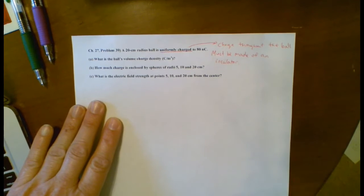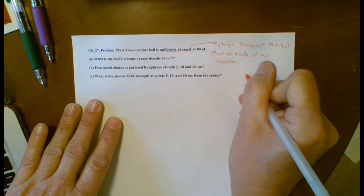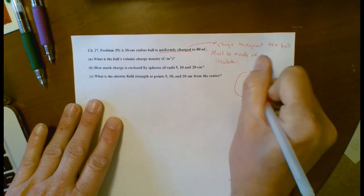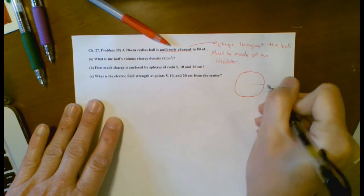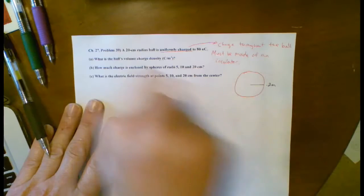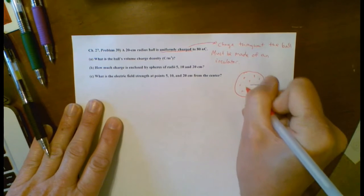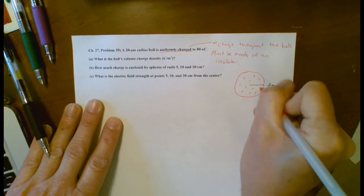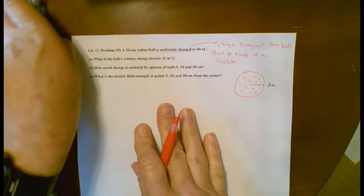And what does that mean? It must be made of an insulator. Otherwise, if it's a conductor, all the charge would go to the outside surface. So in my mind, I'm visualizing something like this, where we've got a 20-centimeter radius here. I'll do that as 0.2 meters. And the charge is throughout. I'm drawing a two-dimensional drawing, kind of crappy, of what should be a three-dimensional thing. But it says that the charge is spread uniformly throughout that.